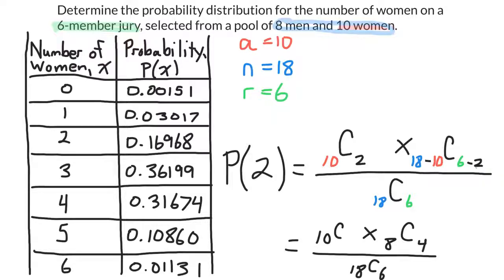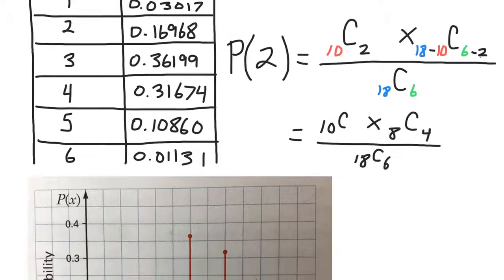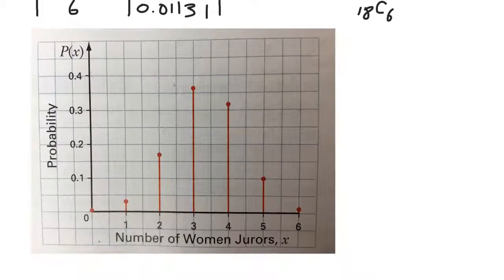And as you can see, the probability is highest for three women being selected. And I could use this probability distribution table to make a probability distribution graph. So I could plot the graph, and it would look something like this.